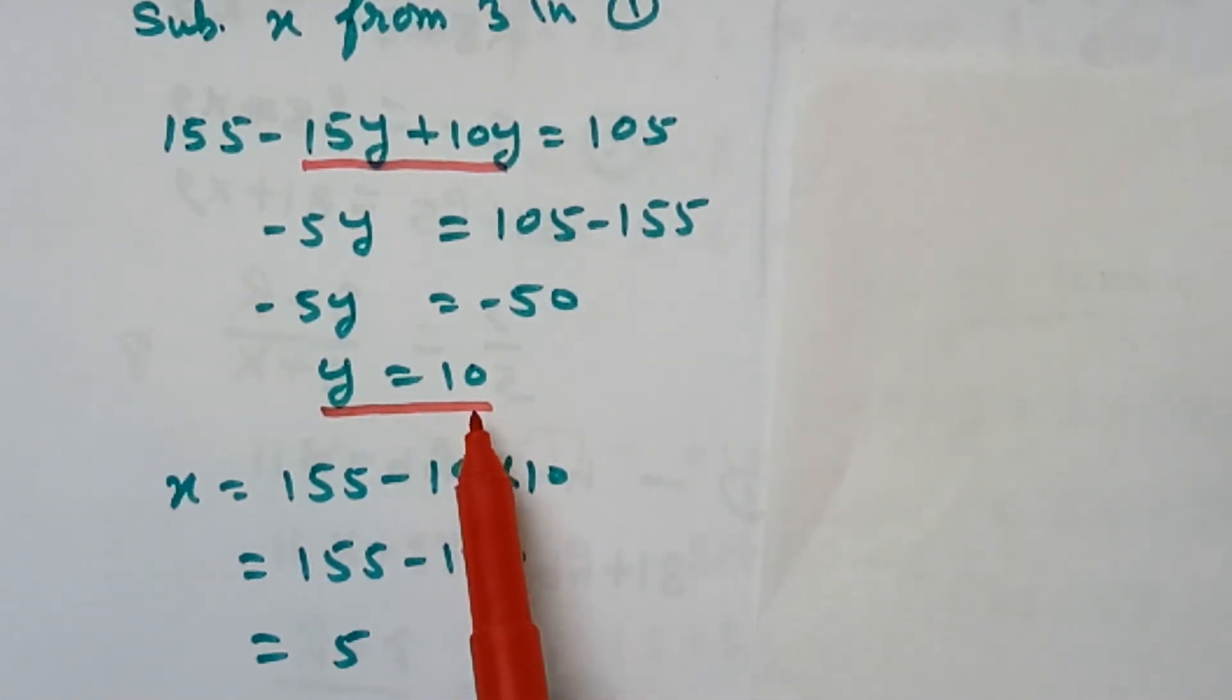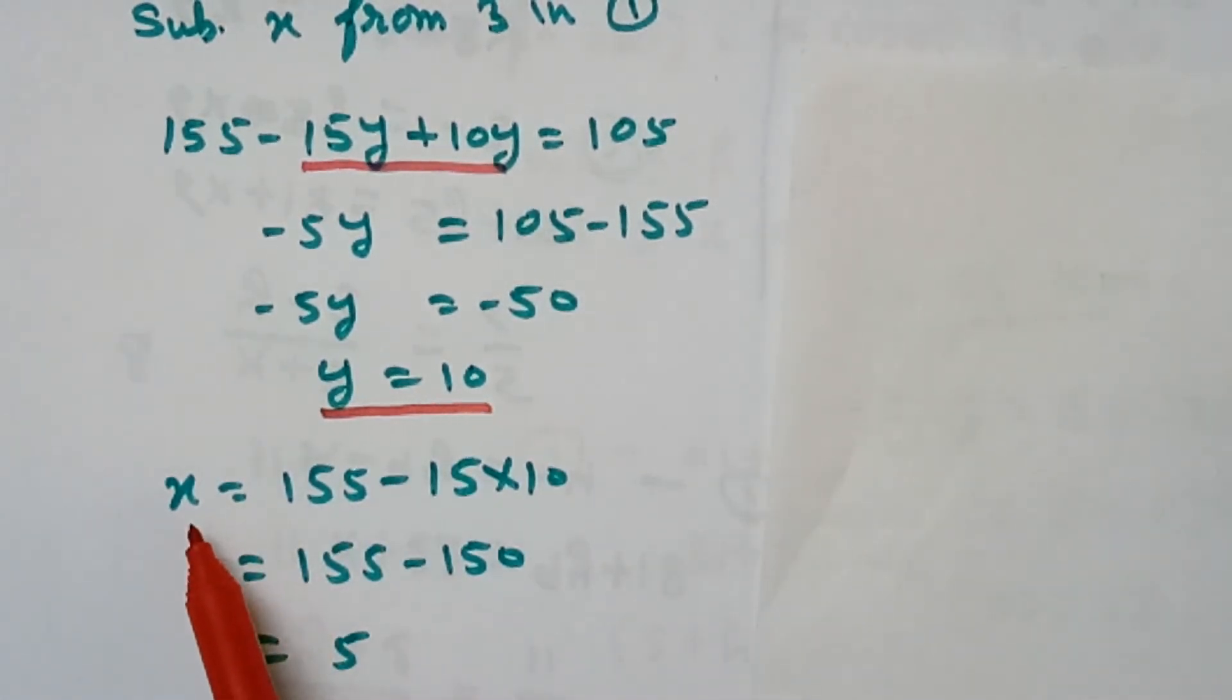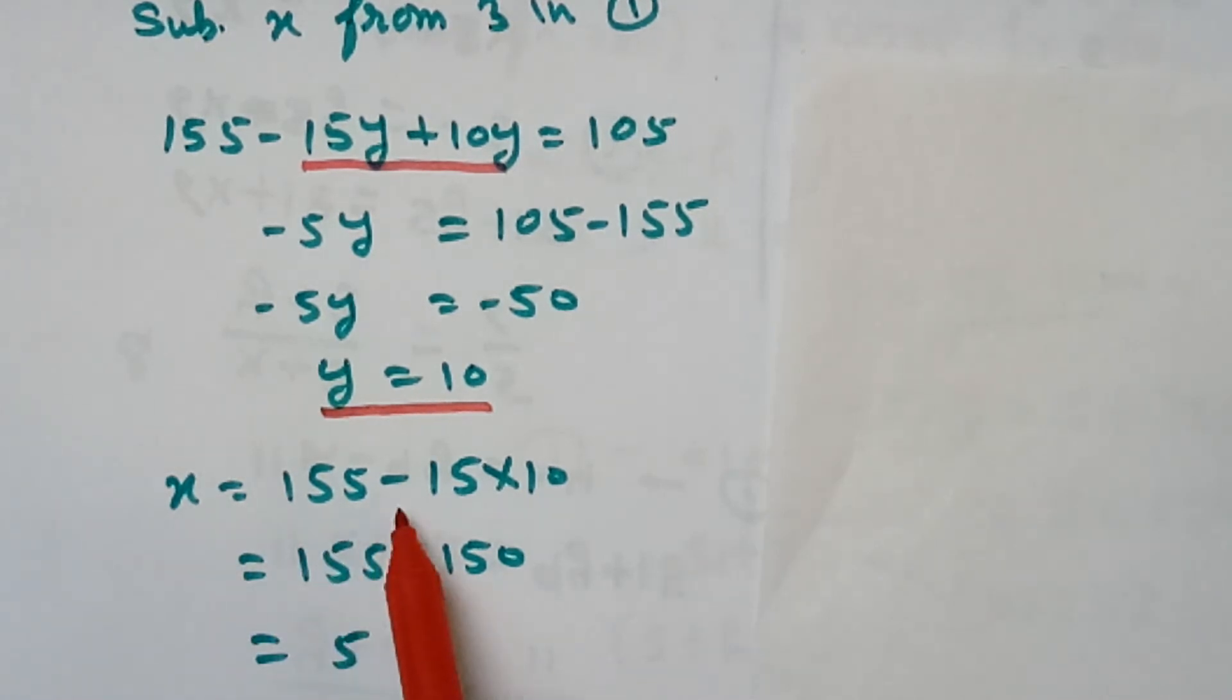Now, we put the value of y in the third equation. x equals to 155 minus 15 because here was y, y equals to 10. 15 into 10 is 150. 155 minus 150 is 5.